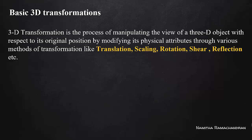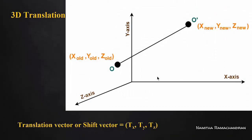In this video, we will do 3D translation. Translation means position change. In 2D, we specified translation parameters along two axes. Now in 3D, we need to specify values along the x-axis, y-axis, and z-axis.